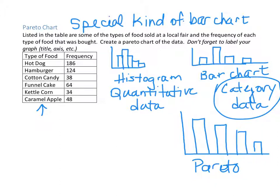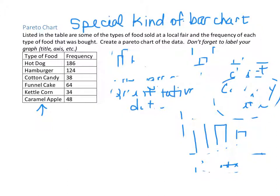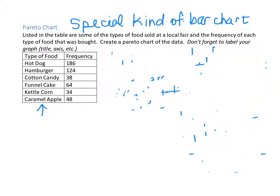So with all of that said, now we're ready to actually talk about constructing this. So, our categories are hot dogs, hamburgers, cotton candies, funnel cake, kettle corn, and caramel apples. Now, if we put these in order, the first thing that we need to do is to realize which category is going to be the tallest.